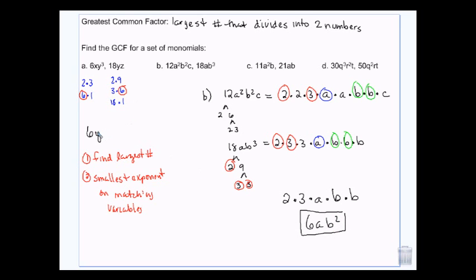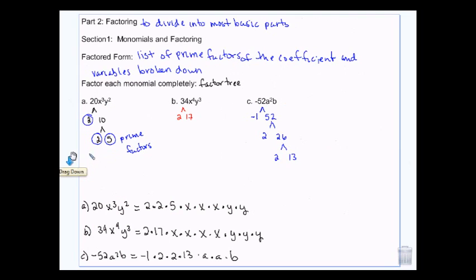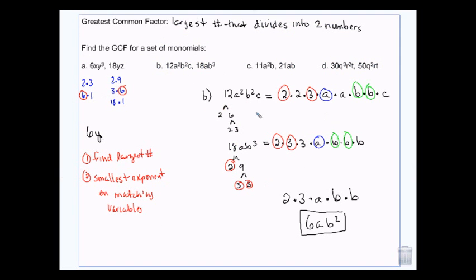So we can either find the factors and figure out which the largest number is, and then look at the exponents on the matching letters and pick the smallest exponent, or we can factor everything all out. For 12 and 18, that might not have been necessary, but if you have really large numbers — like what's the GCF between 128 and 356 — I'd have to sit there and factor it all out. Small numbers, I tend to use the first method. Larger numbers, I tend to use the factor tree method. But they both work.